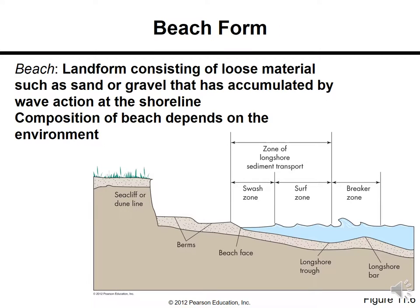A beach is a landform consisting of loose materials such as sand or gravel accumulated by wave action at the shoreline. The composition of beach sediments depends on the environment — shallow versus deep — wave velocity, and the type of rock or cliffs near that coastal region. These factors define the color and composition of sand you can expect at a given beach.